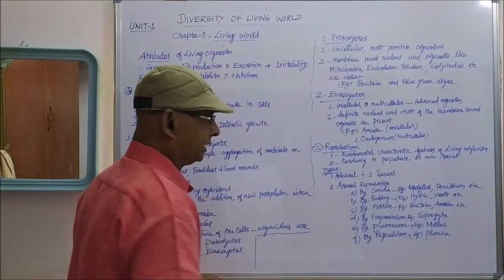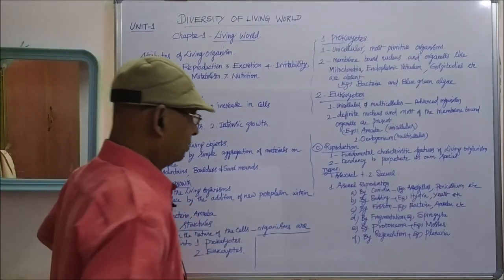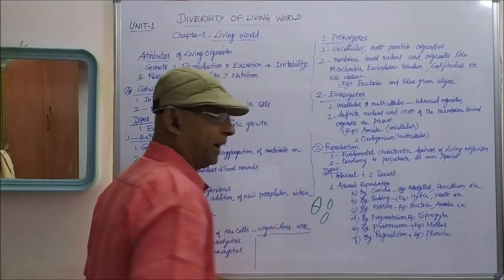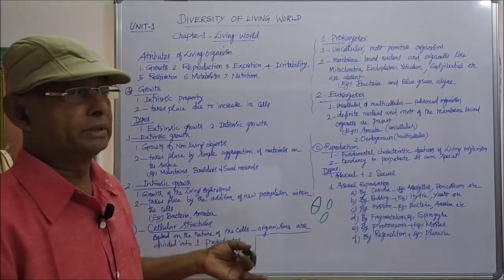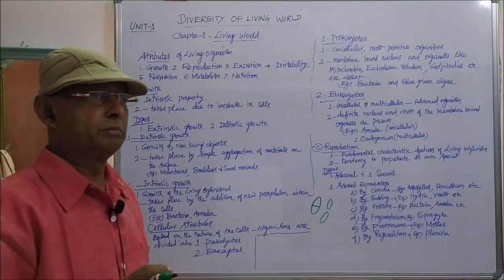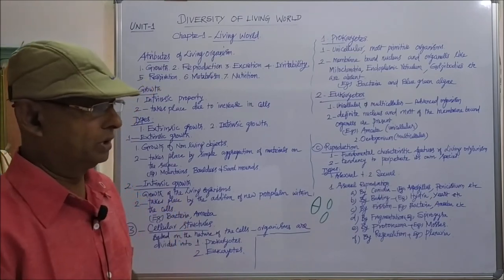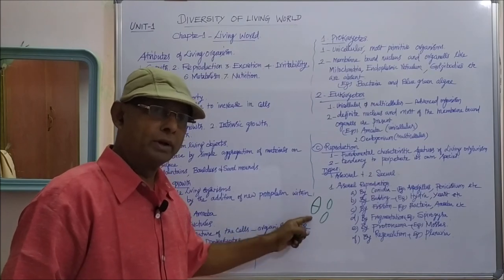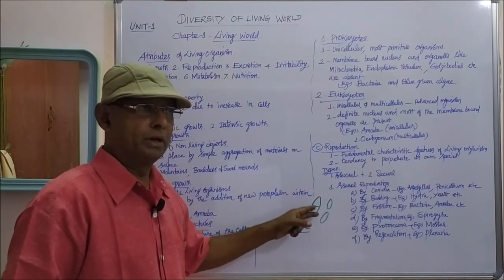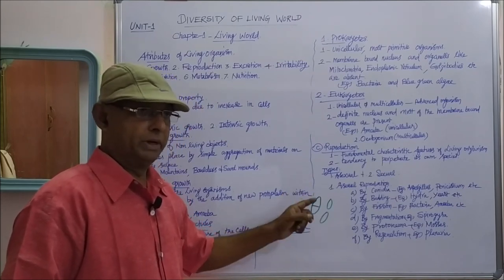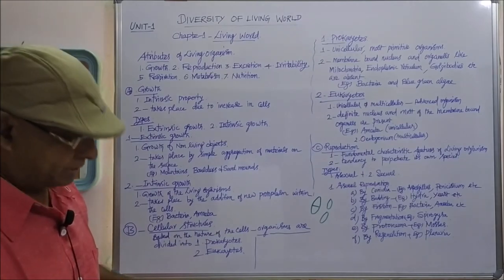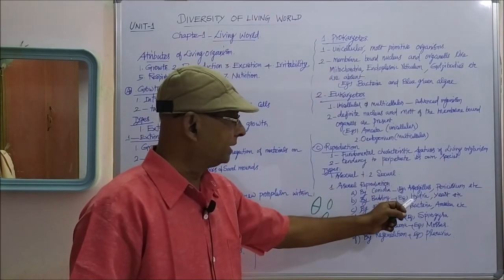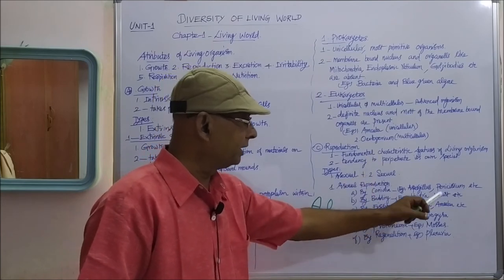The next method is fission, which occurs in bacteria and amoeba. In binary fission, one organism divides equally into two, forming two organisms. In multiple fission, one organism divides and forms several organisms. So binary fission produces two organisms, while multiple fission produces many.